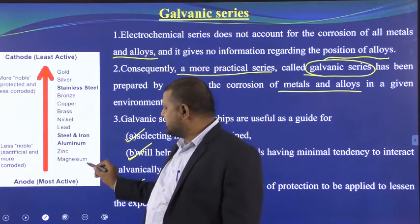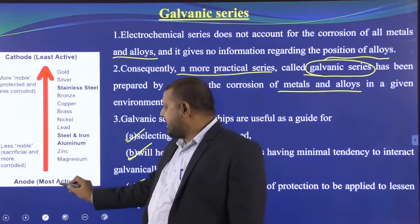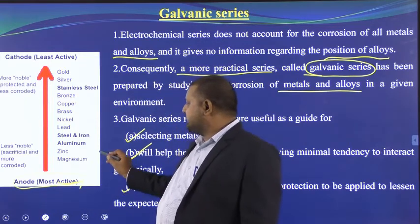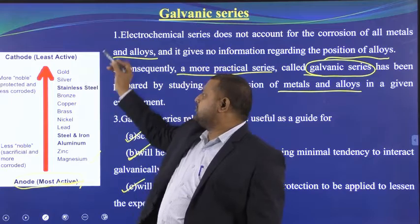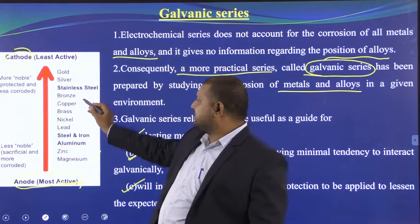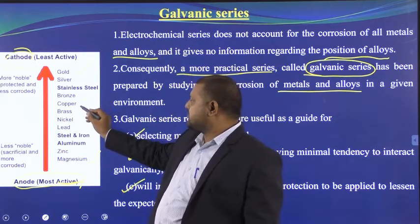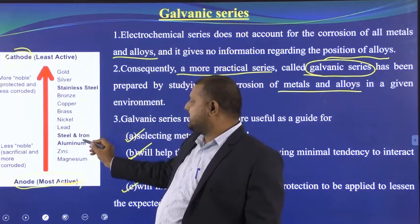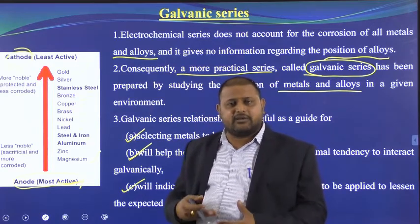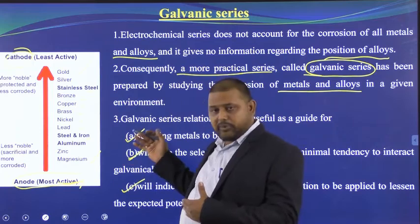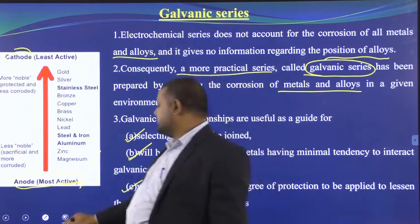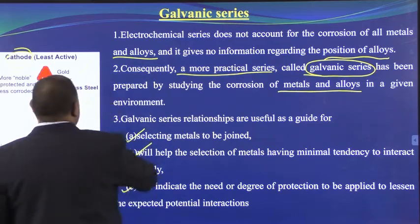From the galvanic series, you can see which metals can be joined. Magnesium is the anode — most active — and gold is the least active, acting as cathode. The series includes alloys: stainless steel, bronze, copper, brass, nickel, lead, steel, aluminum and zinc — making this a more practical approach.